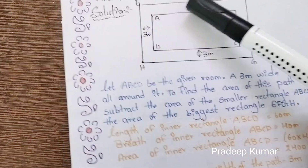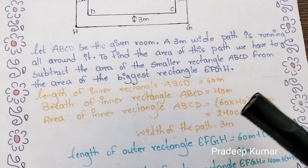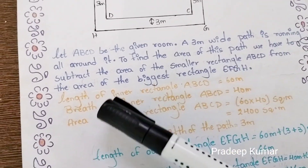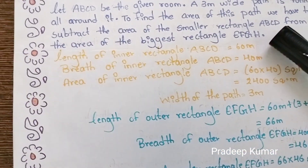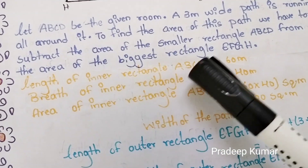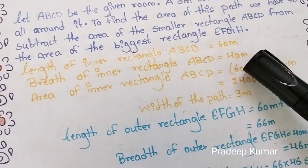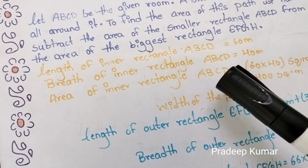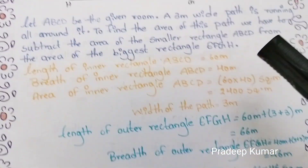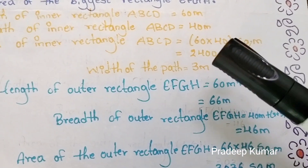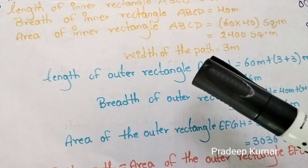To find the area of the path, we have to subtract the smaller rectangle ABCD from the area of the bigger rectangle EFGH. Length of the inner rectangle ABCD is 60 meters. Breadth of the inner rectangle ABCD is 40 meters. Area of the inner rectangle ABCD is 60 into 40, that is 2400 square meters.